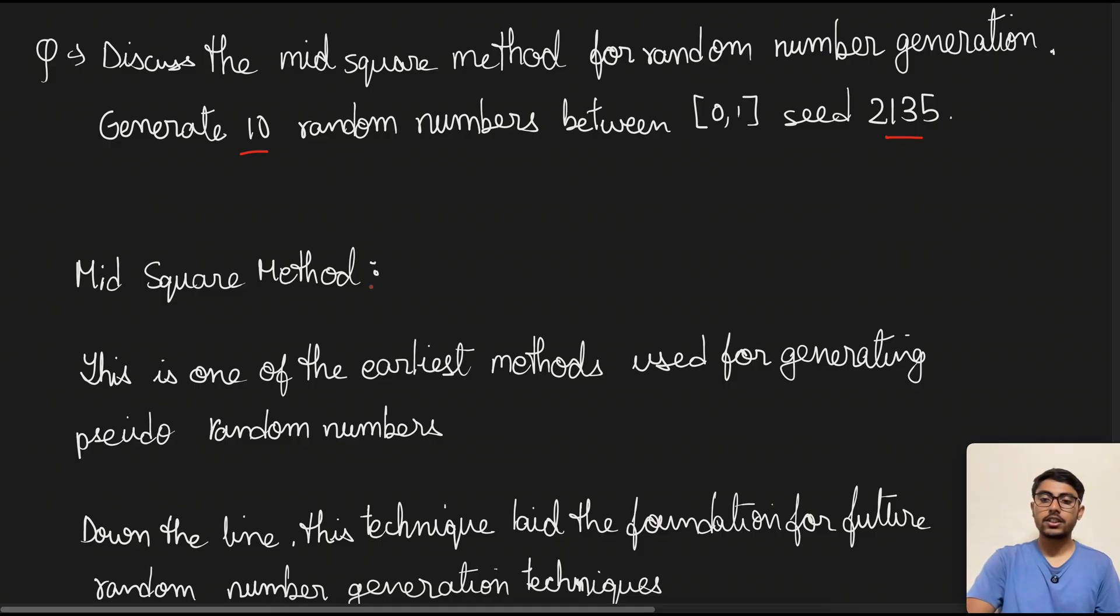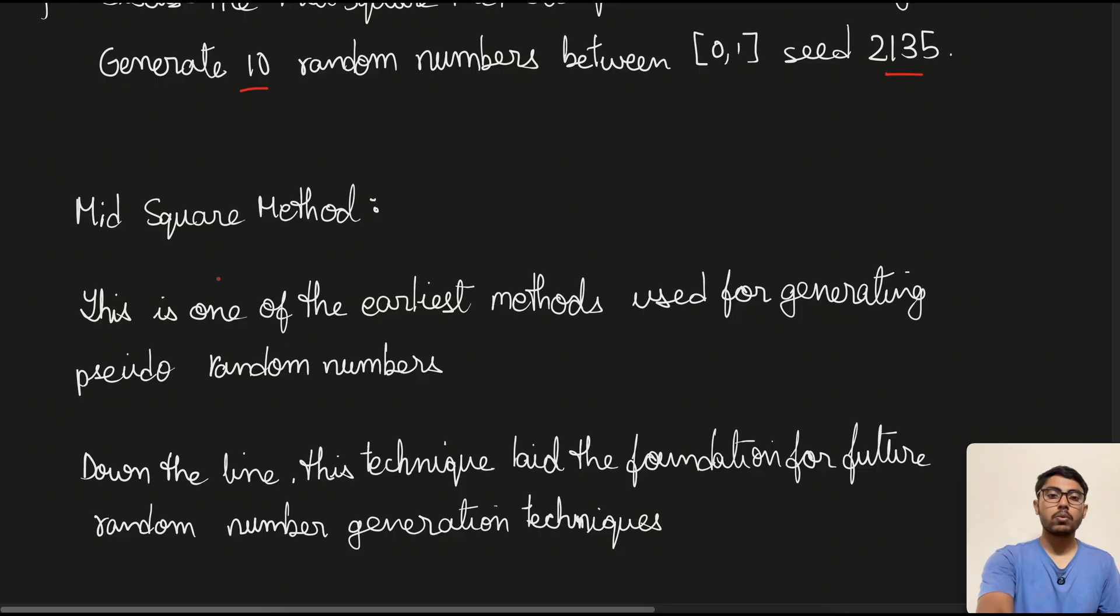So first we'll understand what is mid square method. This is one of the earliest methods for generating pseudo random numbers. We have also covered another random number generation technique which is called linear congruential method. I'll put that in the eye button here, you can go and check out that as well. So coming back to mid square method, this is one of the earliest methods for generating random numbers or pseudo random numbers. Down the line, this technique laid the foundation for future random number generation techniques as the linear congruential method.